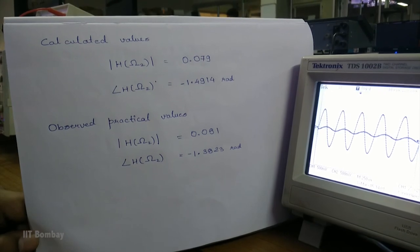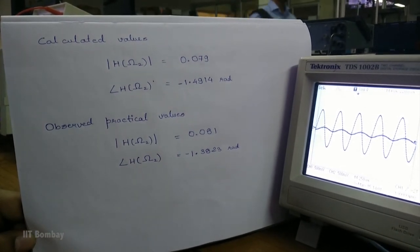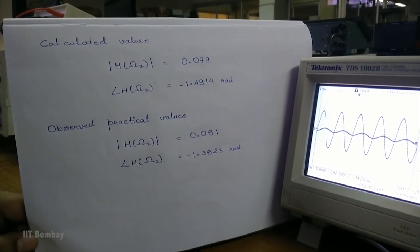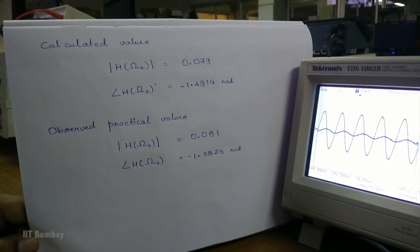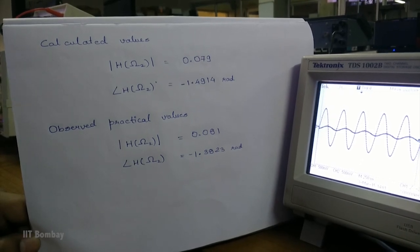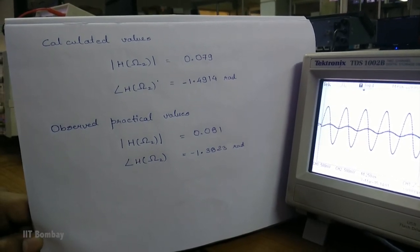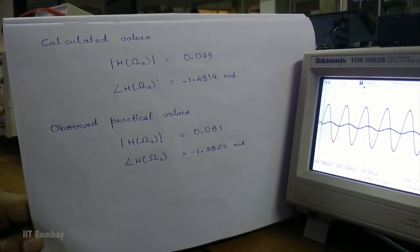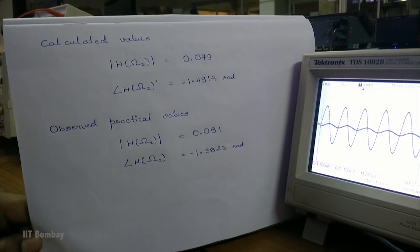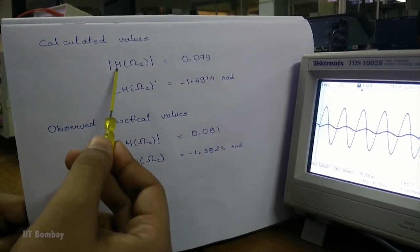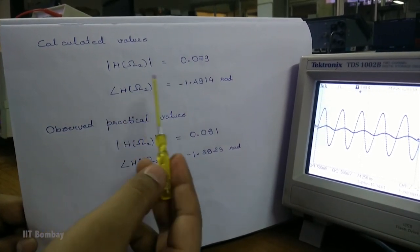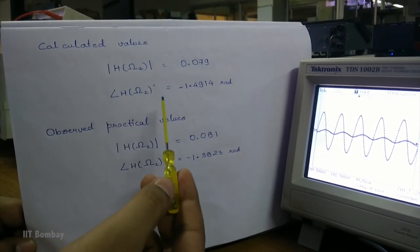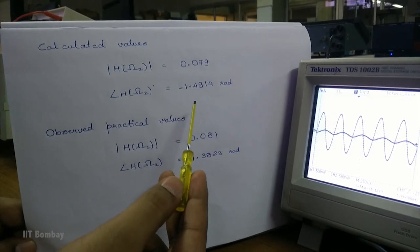Through the practical observations, we found that the amplitude of the transfer function is 0.081 and the argument turns out to be minus 1.3823 radians. We found the argument in the same way as we did for the previous frequency. The calculated values give an amplitude of 0.079 and an argument of minus 1.4914 radians.